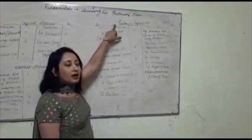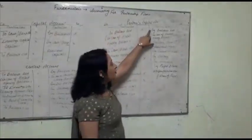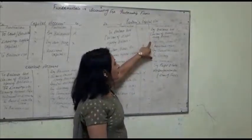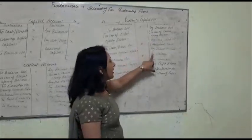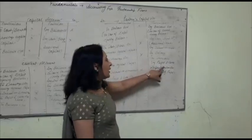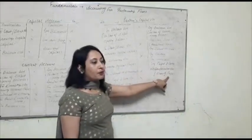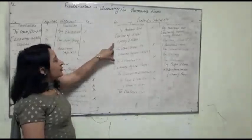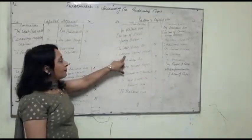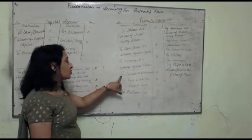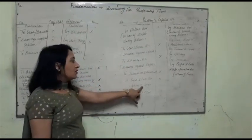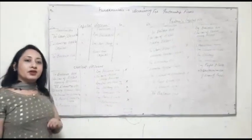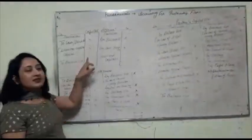If the capital is fluctuating, only a single account is prepared called the partners capital account. It starts with by balance brought down, meaning capital invested by the partners in the firm. Then by cash or bank for additional capital introduced, by salary, by commission, by interest on capital, and by profit and loss appropriation account meaning share of profit. The debit side shows: to balance brought down for a debit balance of capital, to cash or bank for drawings, to interest on drawings, to profit and loss for share of loss, and then to balance carried down.